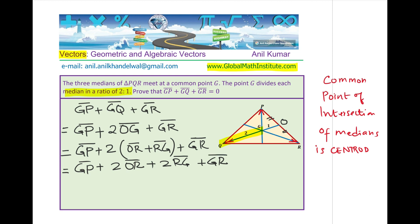This term, which is 2 times OR, two times can be written as P to R, correct? So we can write this as GP plus P to R plus 2RG.